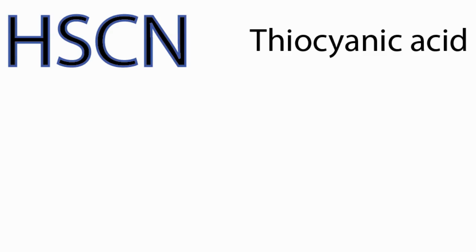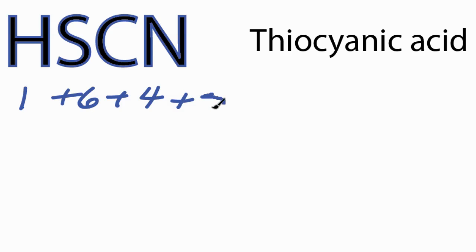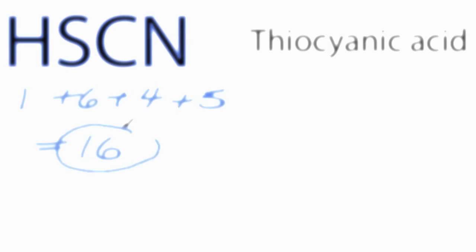This is the Lewis structure for HSCN. Let's count the valence electrons first. We have 1 for hydrogen, plus 6 for sulfur, plus 4 for carbon, and then we have 5 for nitrogen. That gives us a total of 16 valence electrons.